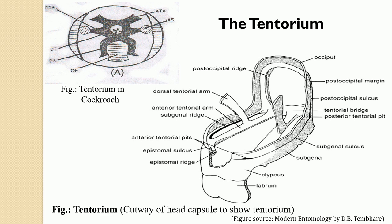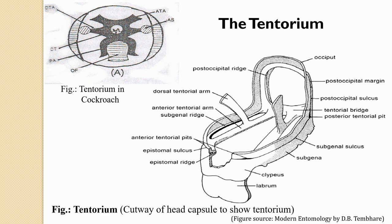This is about the endoskeleton of the insect head — the Tentorium. Keep in mind this is a very important topic for examinations, and the diagram of the Tentorium will frequently be asked for three or four marks. The next part of this video covers modifications in the head capsule of insects. The anterior fronto-clypeal and the posterior lateral as well as ventral regions of the head capsule are greatly modified in some insects, and three kinds of modifications can be seen: the first is the frontoclypeal region, the second is the hypostomal bridge, and the third is the Gula.